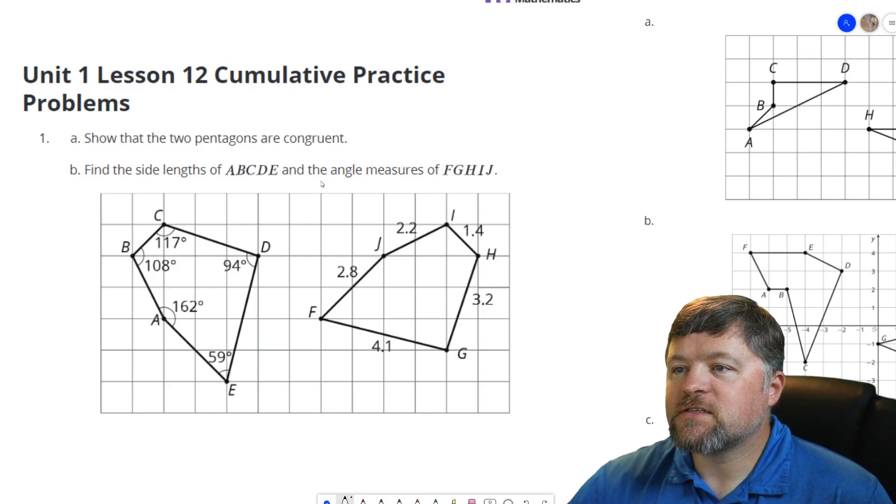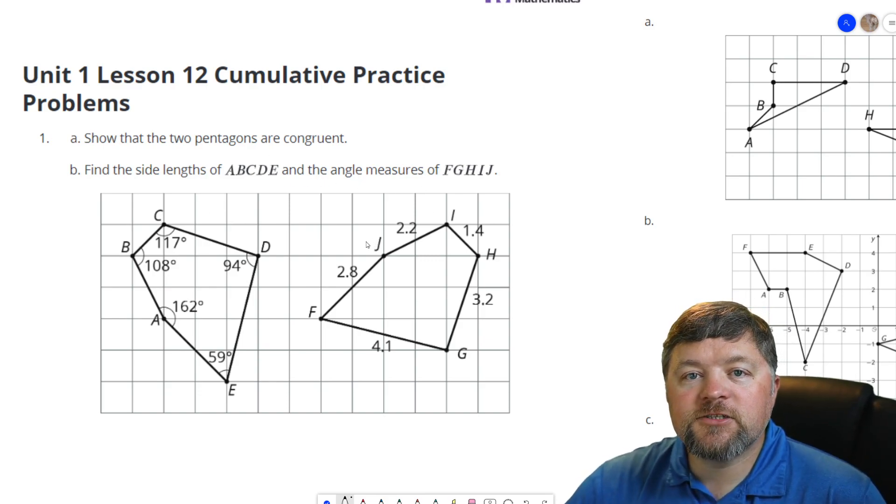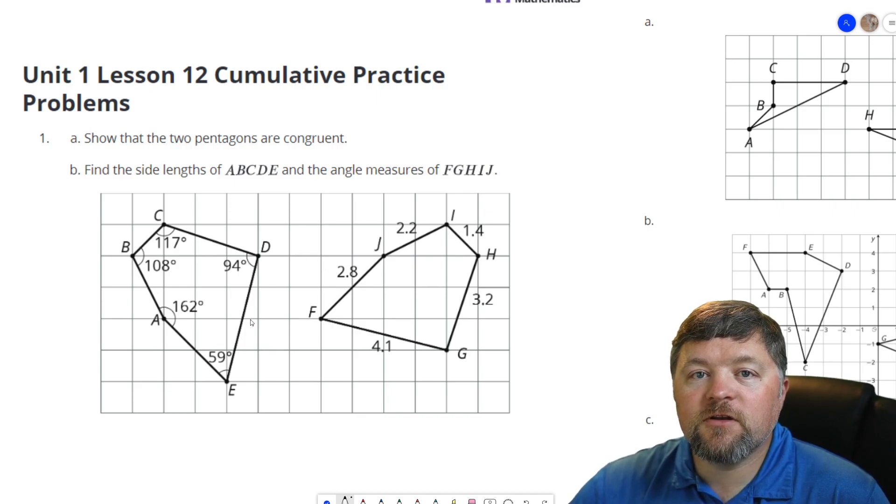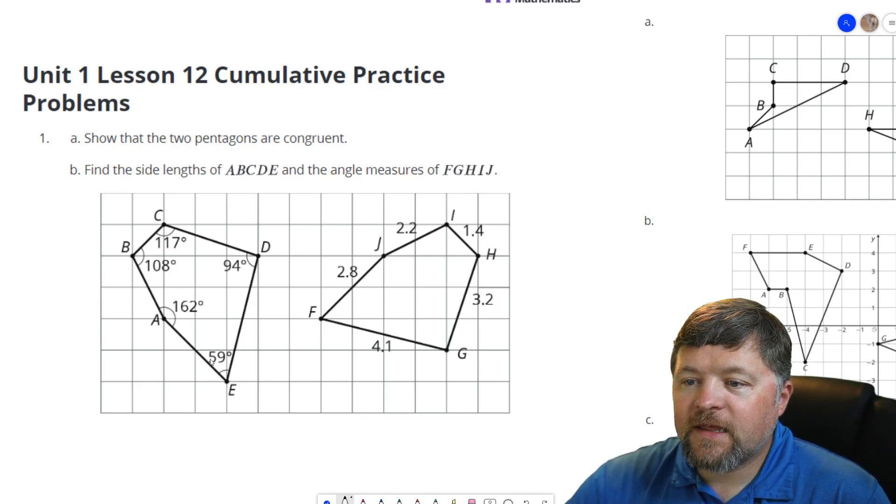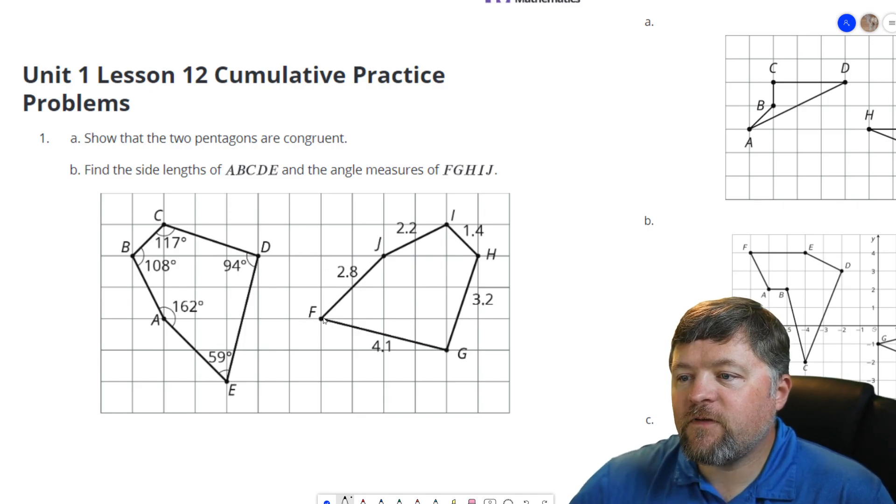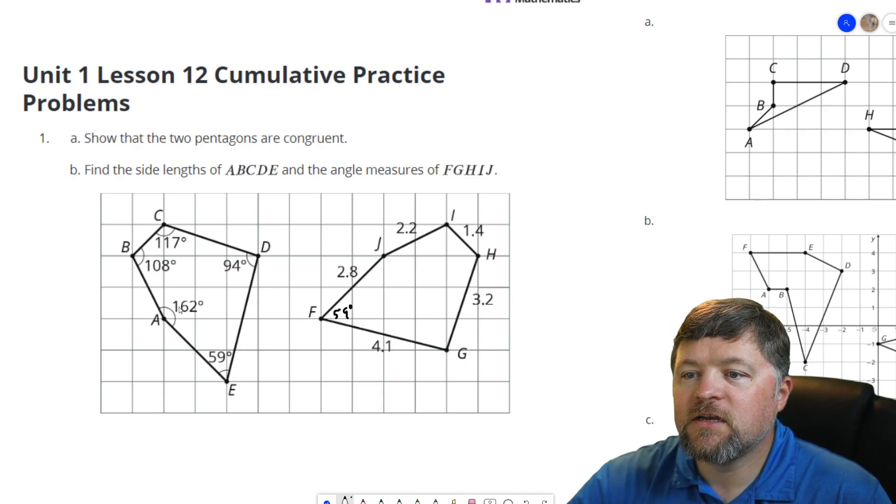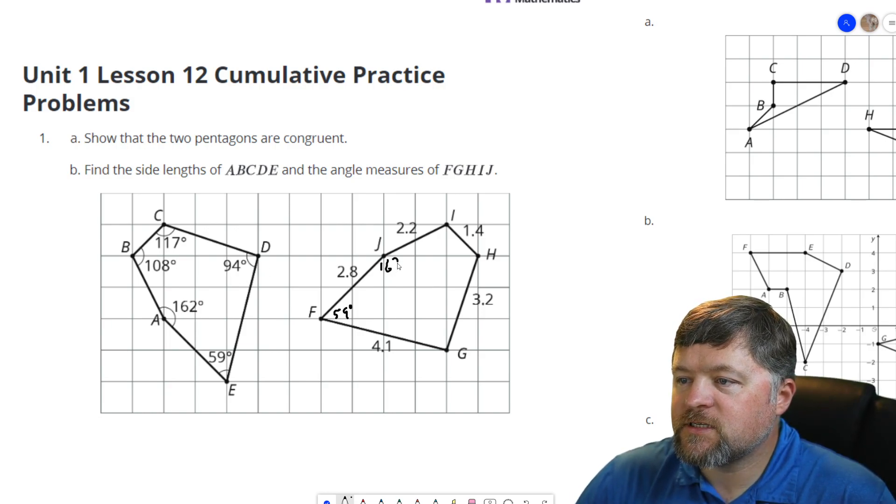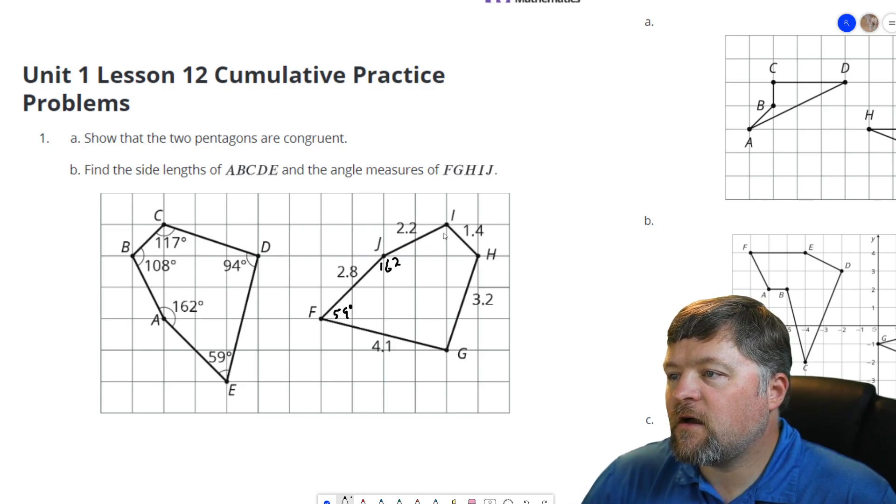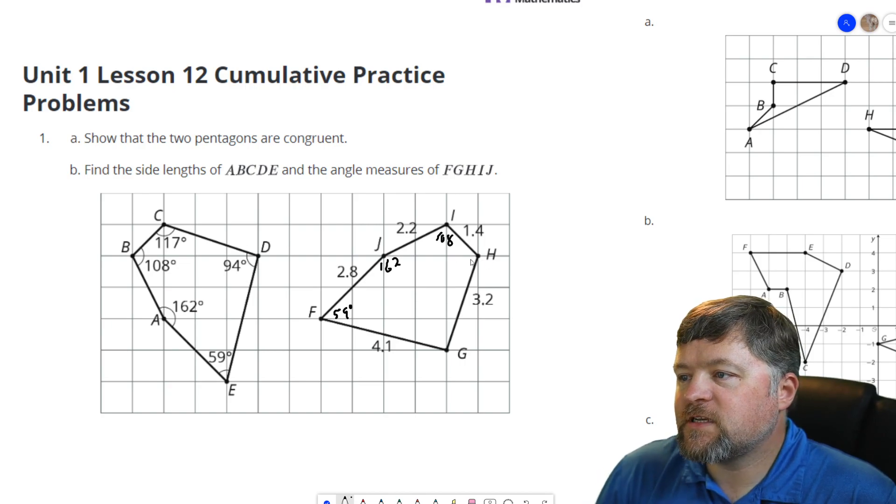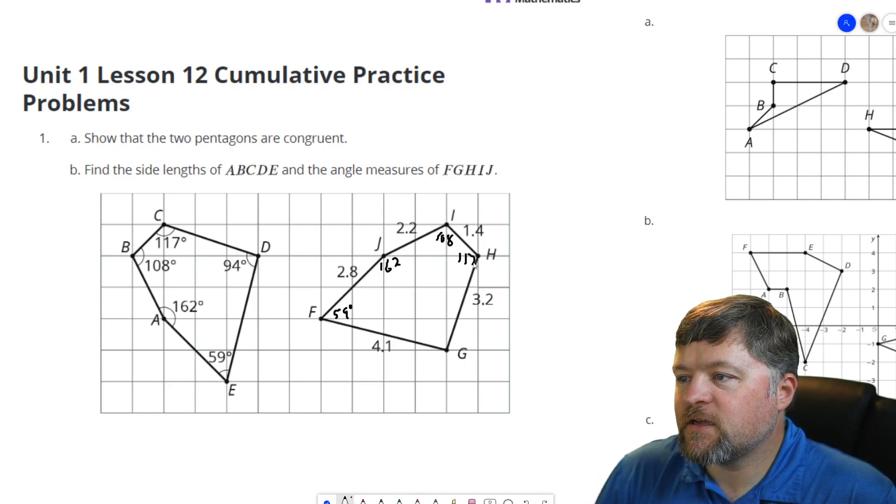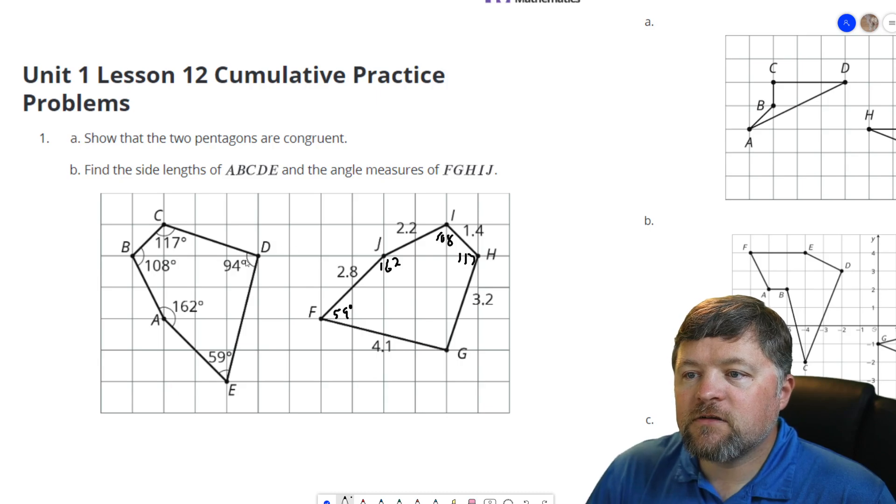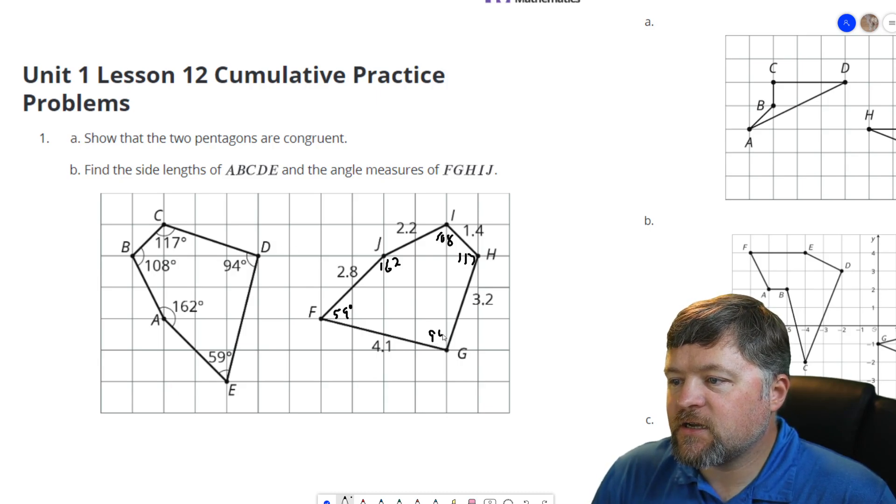Do we need to measure them if we know they are congruent? No we do not. If this angle E is 59 degrees, angle F is also 59 degrees. If A is 162, J is 162. B is 108, I is 108. C is 117, H is 117. D is 94, so G is 94.